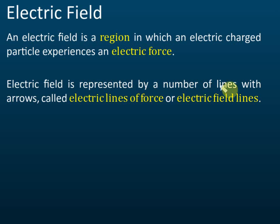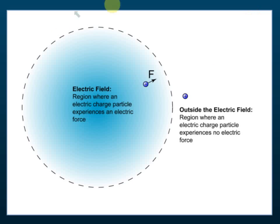An electric field is represented by a number of lines called electric lines of force, or electric field lines — we will discuss that later. So the electric field is a place or region where, if you put some charge inside that region, the charge will experience an electrostatic force. Let's see this diagram: if this region is inside an electric field and you put a charge inside it, immediately there is a force exerted on that charge.